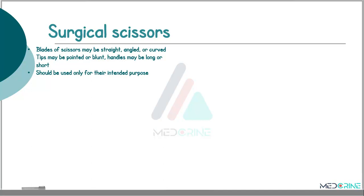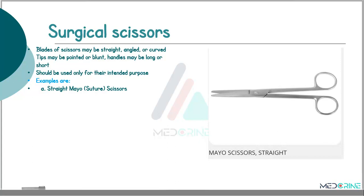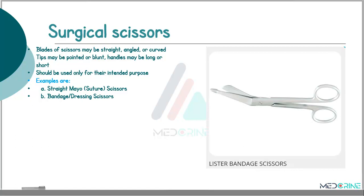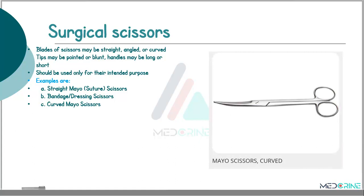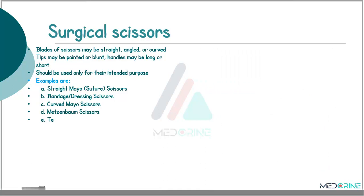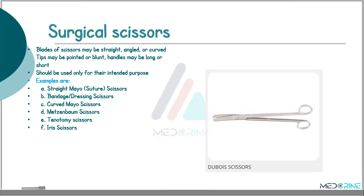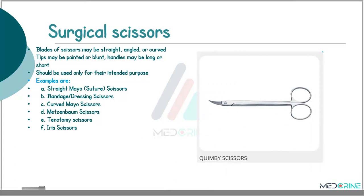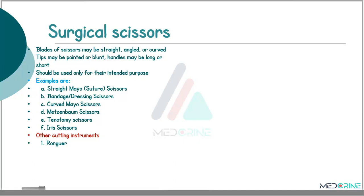Surgical scissors should be used only for the intended purpose. Examples include: a straight Mayo scissor, also called a suture scissor; a bandage or dressing scissor for cutting bandages; a curved Mayo scissor or surgeon scissor for making tissue incisions; Metzenbaum scissors; tenotomy scissors; iris scissors; heat suture scissors; Dubois scissors; Miller scissors; Quimby scissors; and Lachlan scissors.